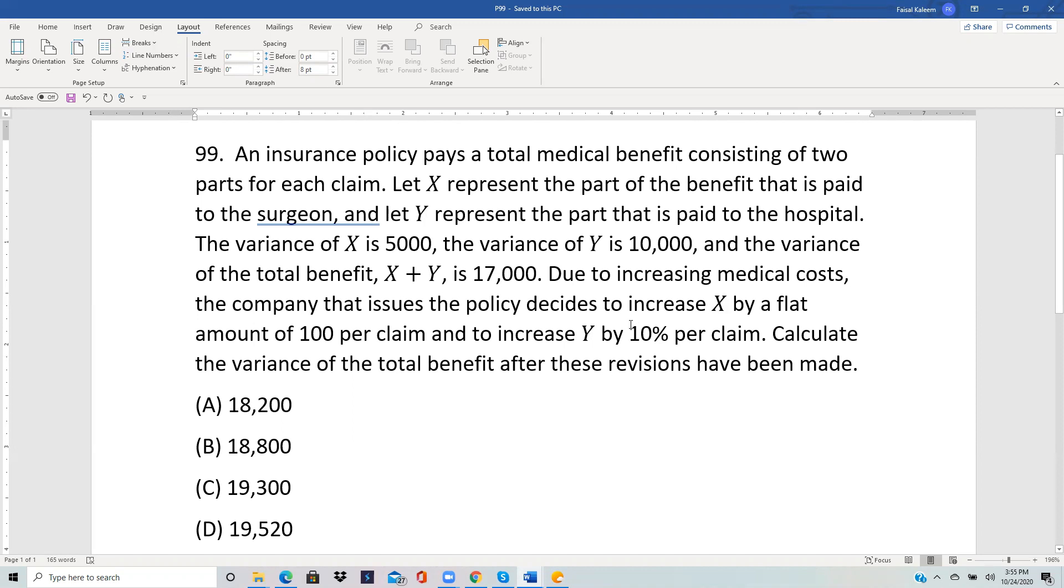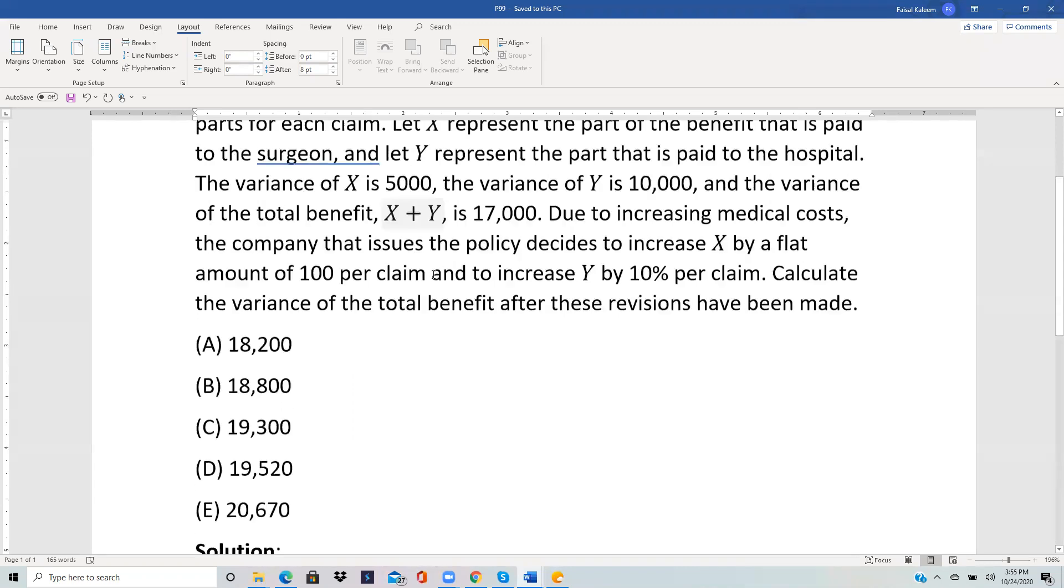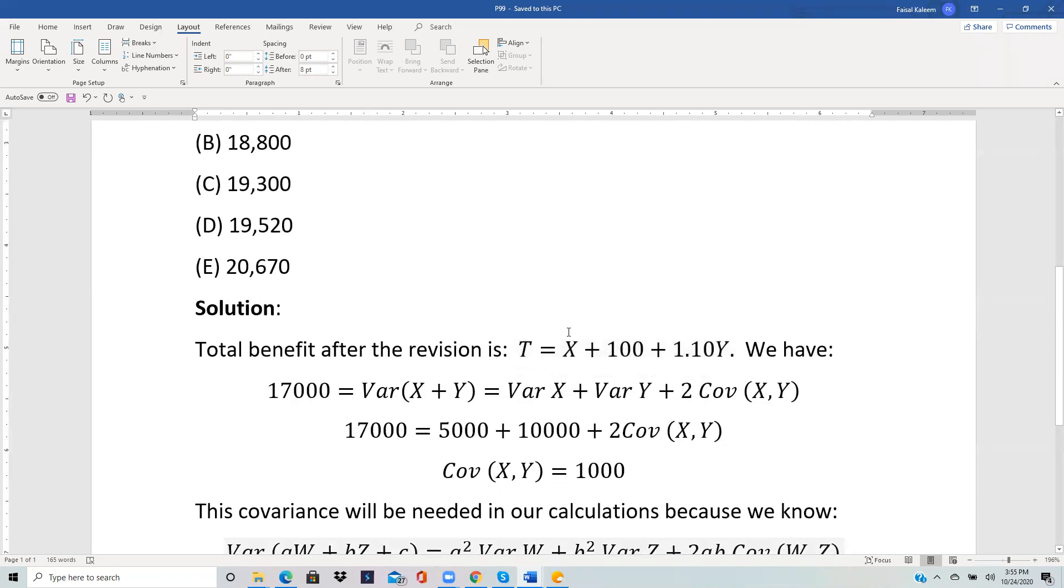So after the revisions, X becomes X plus 100, and Y becomes 1.10Y because it's increased by 10%. So the new total benefit is X plus 100 plus 1.1Y.